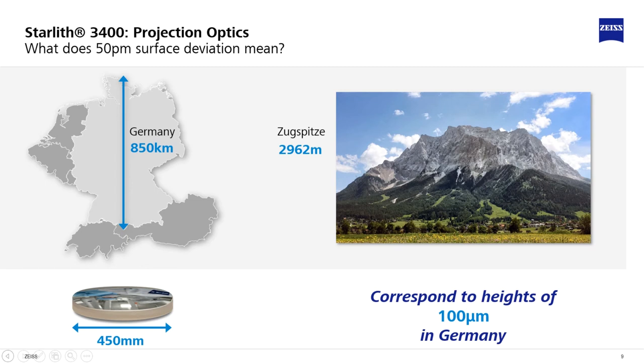To visualize what these specifications on a mirror mean, you could use the following analogy. If you would inflate the size of a single lens element to the size of Germany, the tallest height or the tallest mountain would be roughly 100 micrometers.